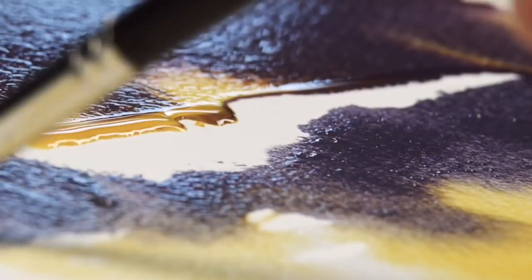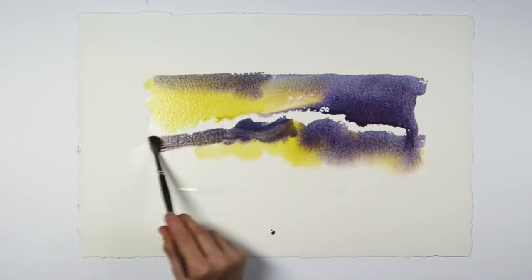The alizarin, through basic chromatography, separates from the cerulean, leaving the pink of the alizarin behind.